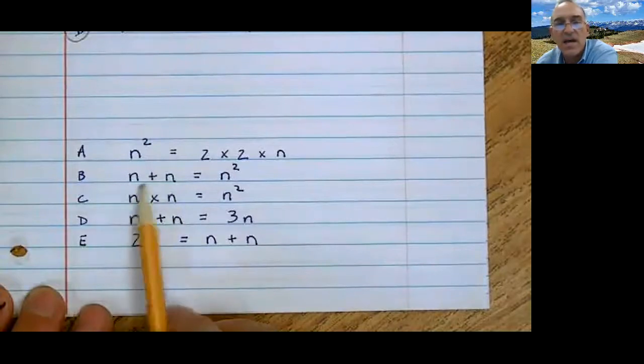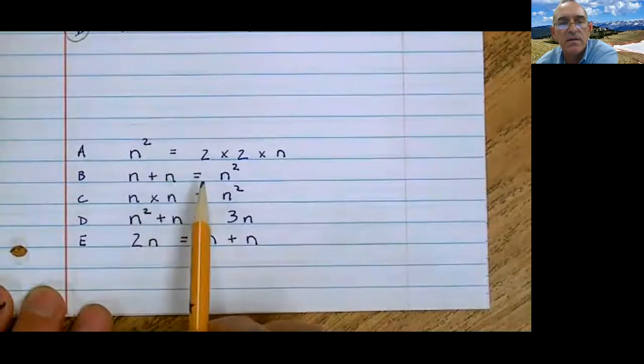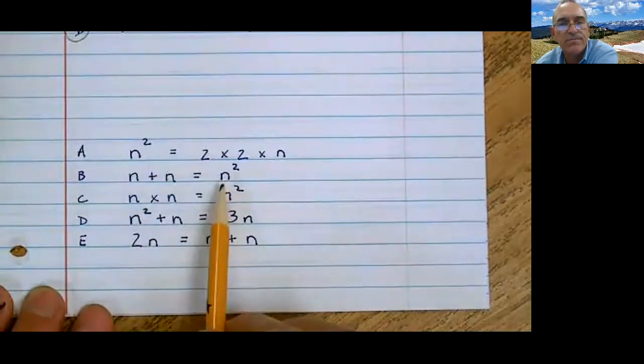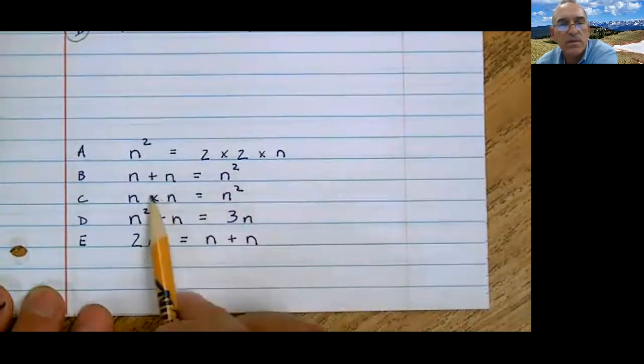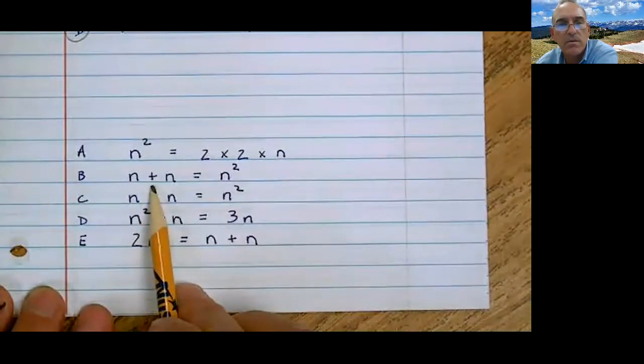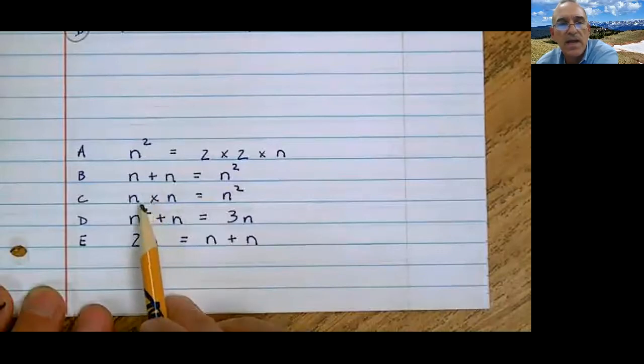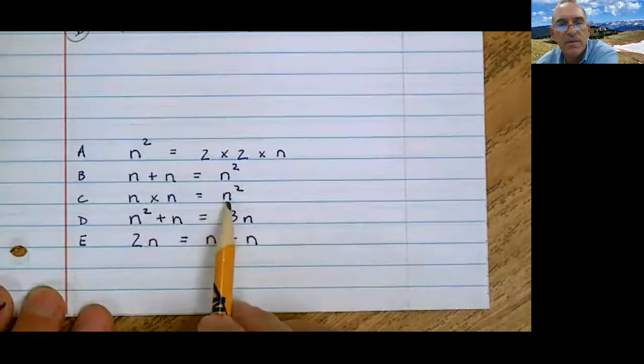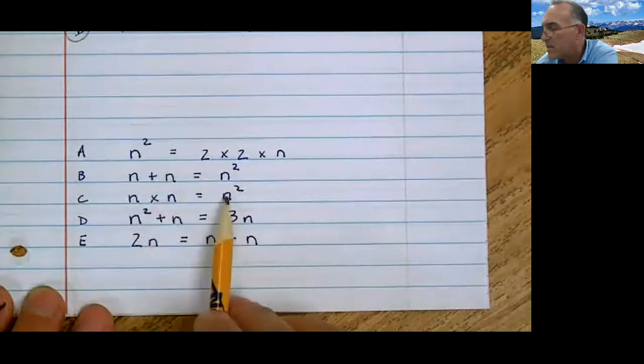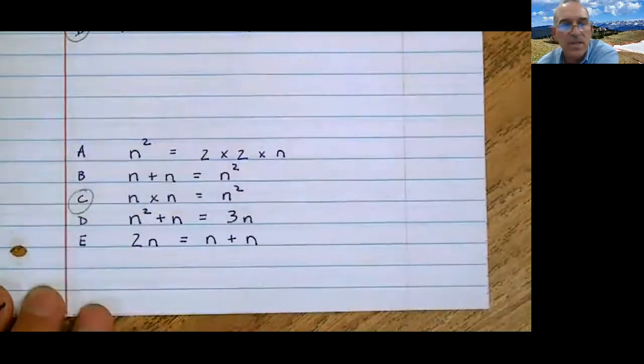How about this one? n plus n equal n squared? No. This over here on the left would equal 2n, not n squared. How about this one? n times n - does that equal that? It sure does. This is n squared, or n to the second. So it's that one.